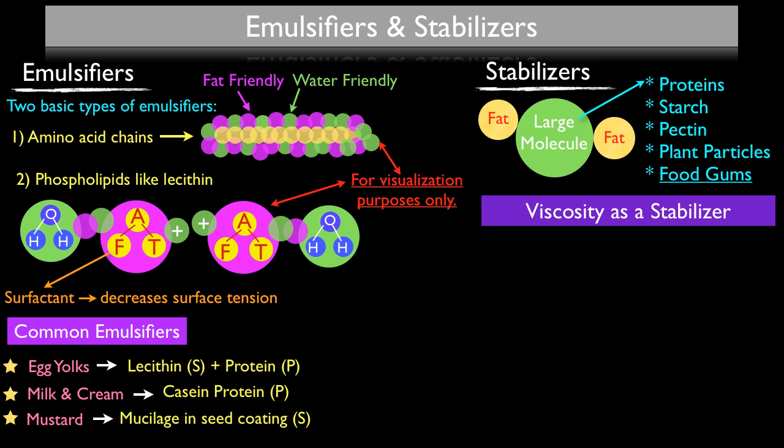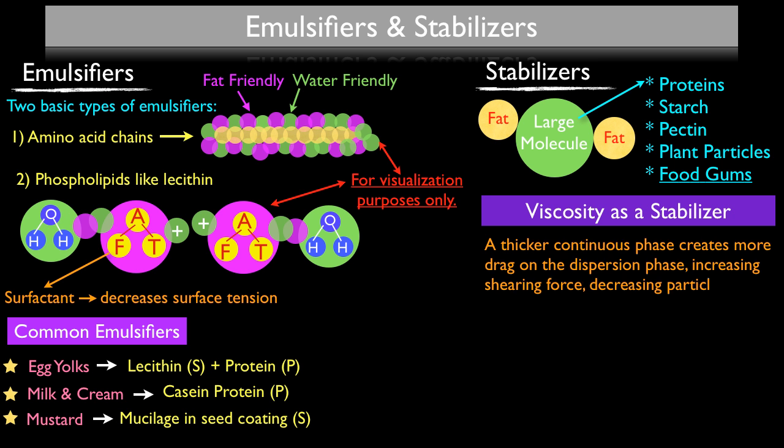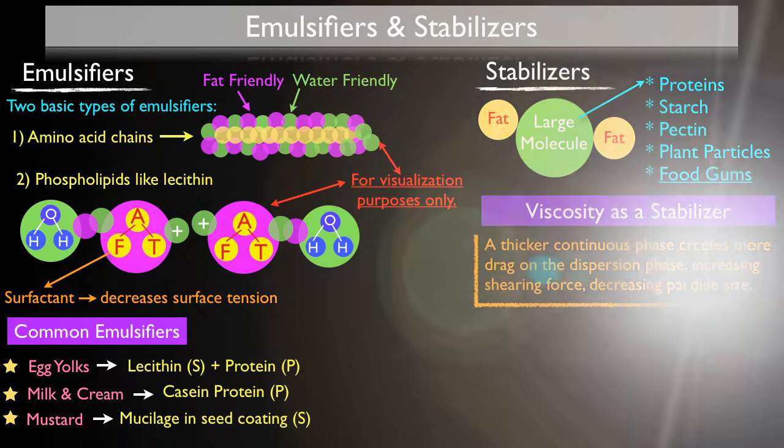The thicker your continuous phase becomes, that thicker continuous phase creates more drag on the dispersed phase — which is your fat — increasing the shearing power used to break up the dispersed fat, which decreases the particle size of the dispersed phase. As discussed in the last video, the smaller you can get your dispersed phase, the more stable your emulsification will be. So you can add purees, plant particles, proteins, and starches to your continuous phase — because they are water-soluble — before you even start adding in the fat, giving you a smaller dispersed phase and a more stabilized emulsion. Those large molecules then keep the fat from coalescing and breaking your sauce.